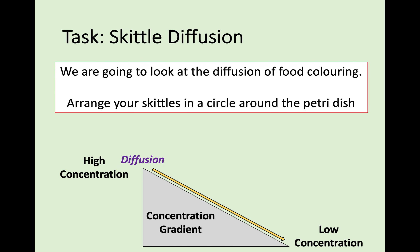Another way to show diffusion is with skittles. If you arrange them around the edge of a petri dish or plate and fill it with water to about halfway up the skittles, the skittle has a high concentration of food colouring and the water has a very low concentration. Diffusion takes place — the food colouring moves from high concentration to low concentration and spreads across the water in a nice pattern. You have not added any energy; it is a passive process.